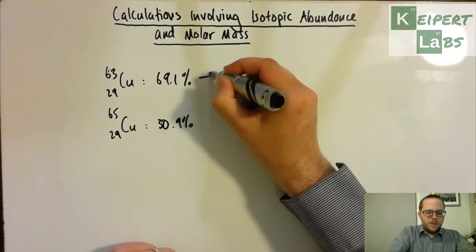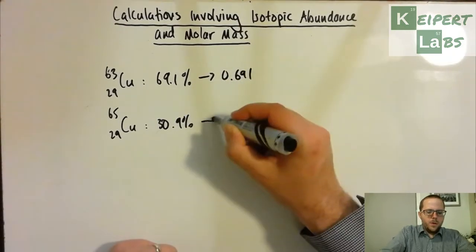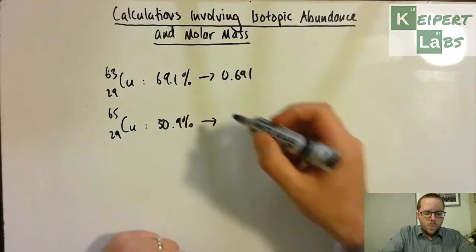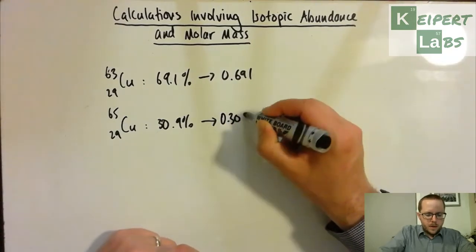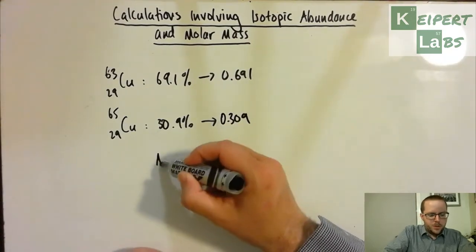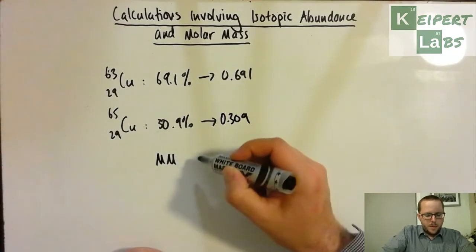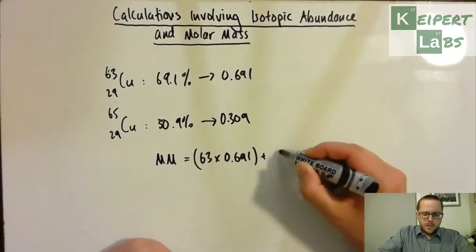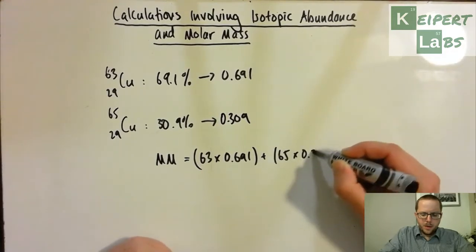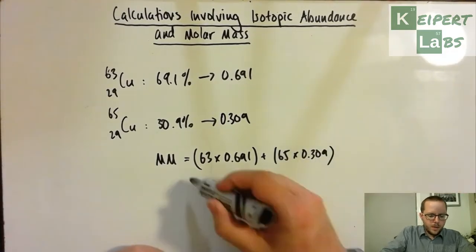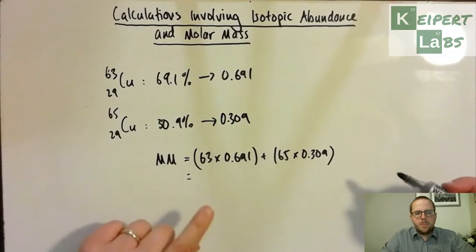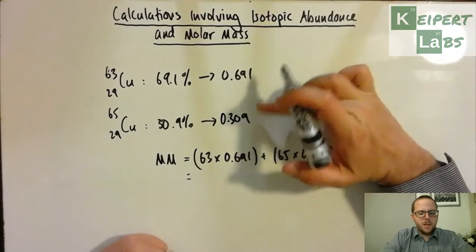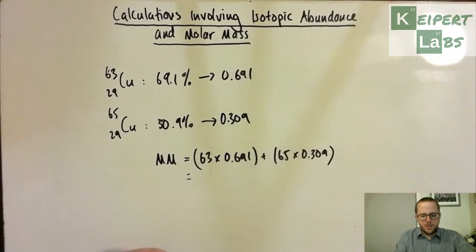So just as before, we're going to convert these to decimals. Or you could actually do them as percentages of, say, 69.1 divided by 100, and it would still work out exactly the same. And so we can do our average molar mass is equal to 63 atomic mass units times 0.691 plus 65 times 0.309. Now, just by gut feeling, you know that it's got to be between 63 and 65, because we've got a larger amount of this than this, it's probably going to be closer to this one.